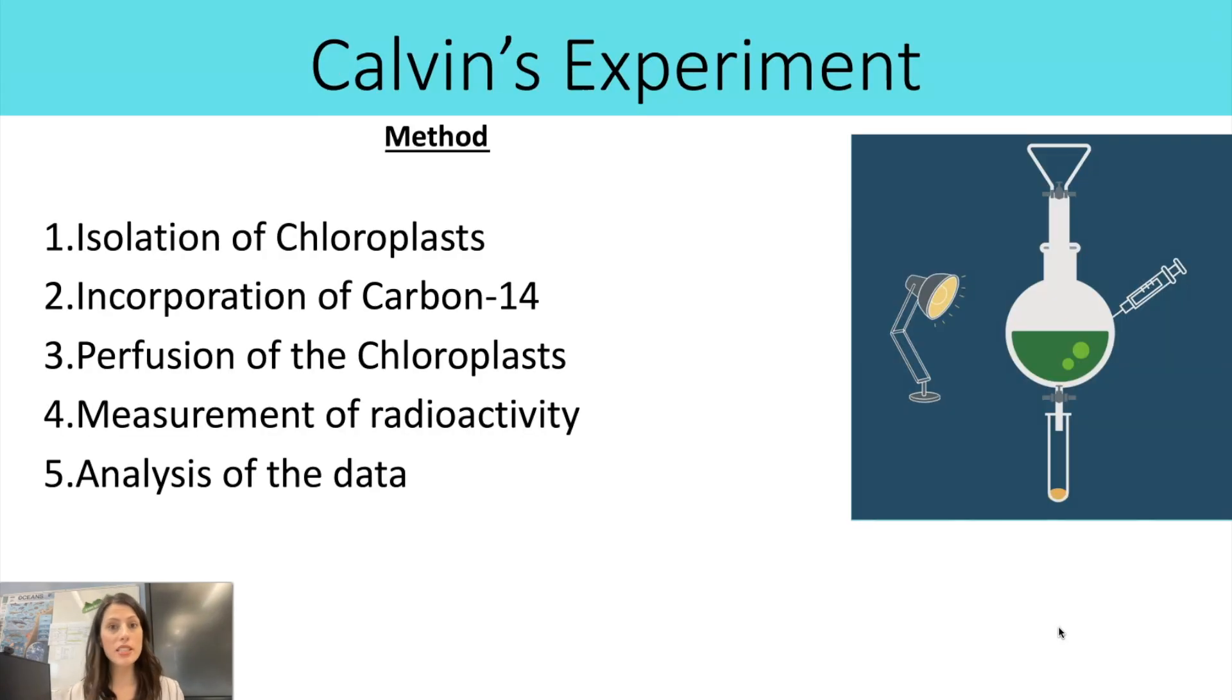Now, the method itself, you wouldn't be expected to remember because this isn't on the spec. As I said, it's a common application question. So it'd probably tell you the method and maybe ask you to explain why they did certain stages. So the first step is the isolation of the chloroplast. And this links really well to topic two, where you learn about cell ultracentrifugation.